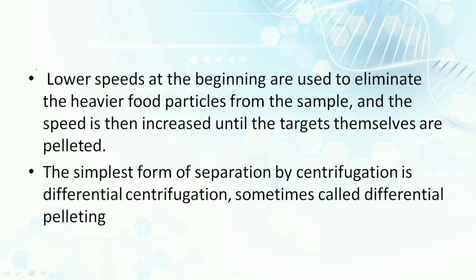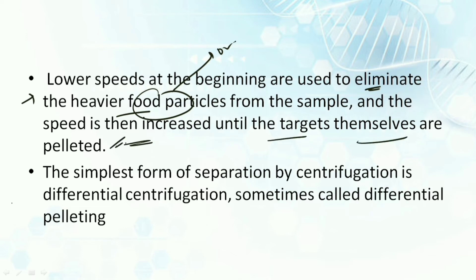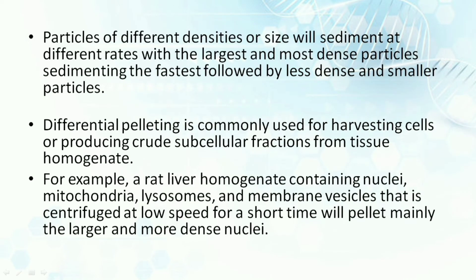Lower speeds at the beginning are used to eliminate the heavier particles or organelles we are focusing upon, and as the speed increases, the target organelles are pelleted. The simplest form of separation by centrifugation is differential centrifugation, also sometimes called differential pelleting - or differential velocity centrifugation. Particles of different densities and sizes sediment at different rates, with the largest and most dense sedimenting fastest at the first step.